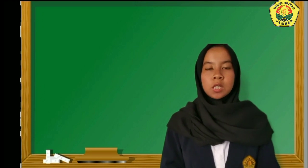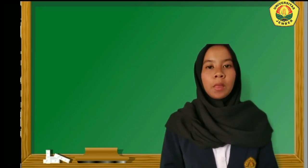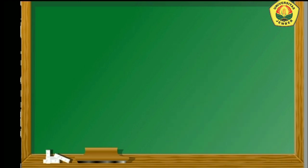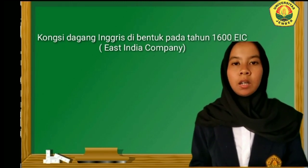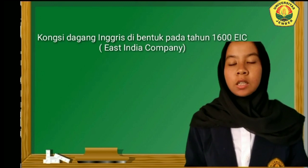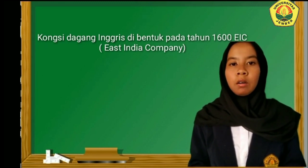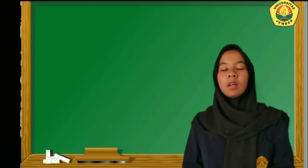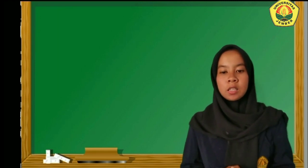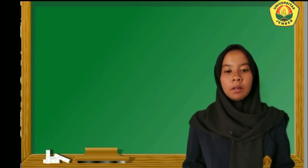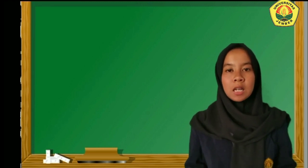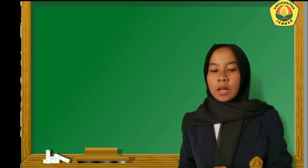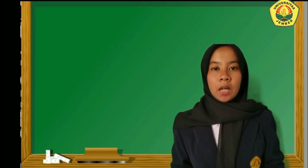Untuk memperkuat posisi orang-orang Barat di dunia timur, mereka membentuk persekutuan dagang bersama untuk setiap kongsi dagangnya. Misalnya saja kongsi dagang dari Inggris, di mana pada tahun 1600 dia membentuk persekutuan dagang bersama dengan nama EIC, yaitu East Indian Company. Para pedagang atau perusahaan dagang masing-masing saling bersaing, bahkan dalam satu negara mereka juga saling bersaing.